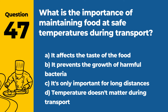Question 47. What is the importance of maintaining food at safe temperatures during transport? a. It affects the taste of the food. b. It prevents the growth of harmful bacteria. c. It's only important for long distances. d. Temperature doesn't matter during transport. Answer b. It prevents the growth of harmful bacteria. Maintaining food at safe temperatures during transport is crucial to prevent the growth of harmful bacteria and ensure food safety.